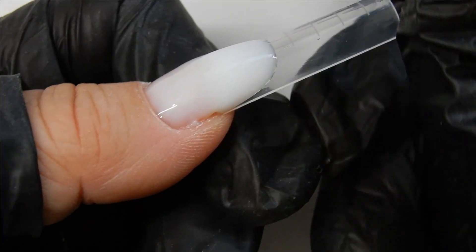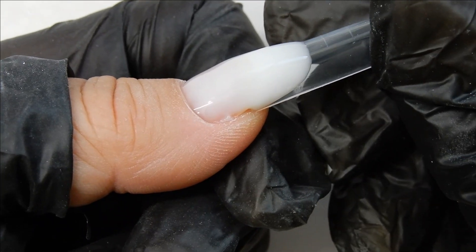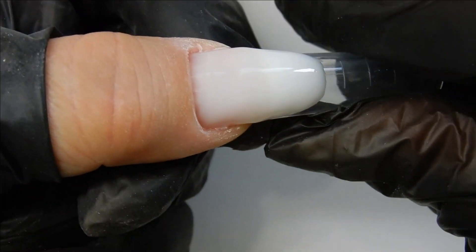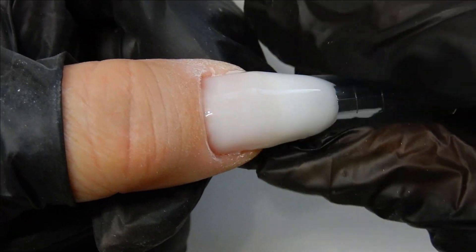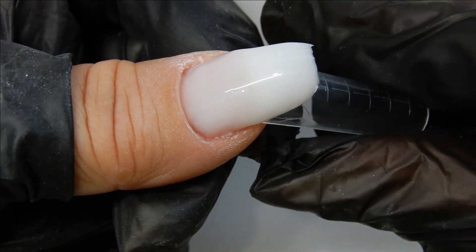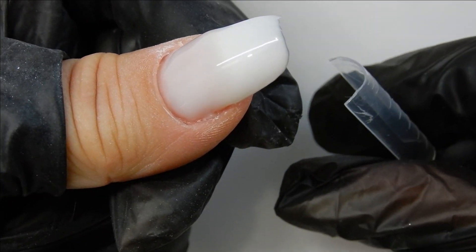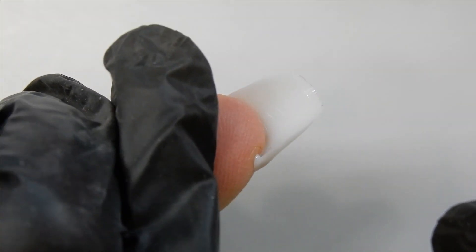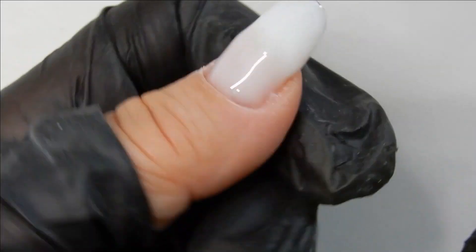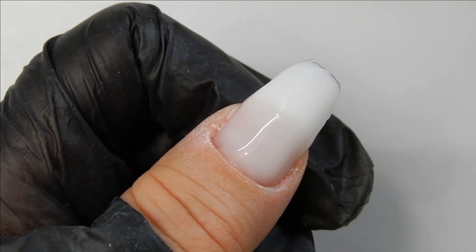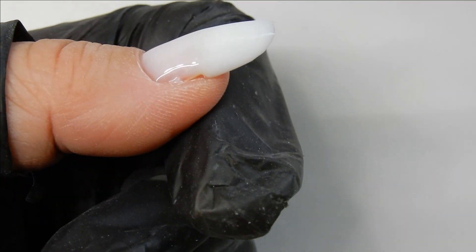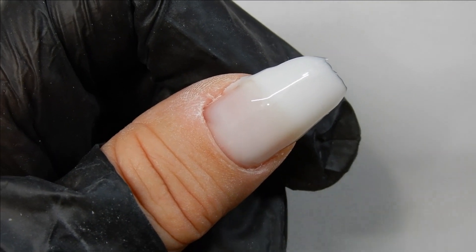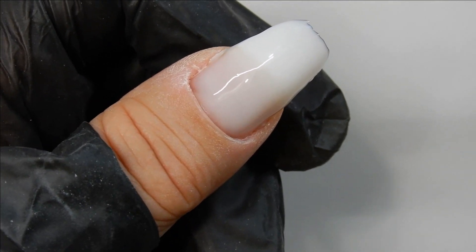This is what the nail looks like so far. There's really no reason to keep the form on anymore, so I'm going to take it off. All you do is just pinch it together and pull down, and there you go. That's what it's looking like so far. Looks pretty good. I just need to put another layer on, build up a little bit more structure, and then I'll clean it and file it.